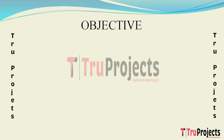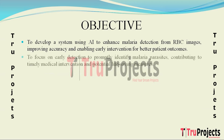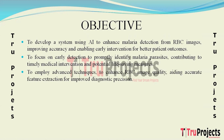The aim is to develop an innovative system leveraging computer vision and machine learning to enhance the accuracy and efficiency of malaria diagnosis from red blood cell (RBC) images. The project focuses on early detection of malaria parasites, contributing to timely medical intervention and potentially saving lives. Advanced image processing techniques are implemented to improve the quality and interpretability of RBC images for more accurate feature extraction.